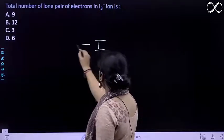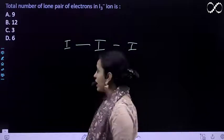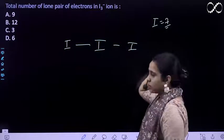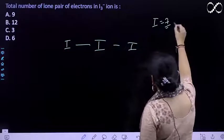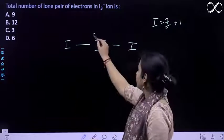The iodine in the center, how many electrons will it have? Iodine is basically having seven electrons in the outermost shell, but it has one more negative charge, meaning plus one, so this iodine has eight electrons.